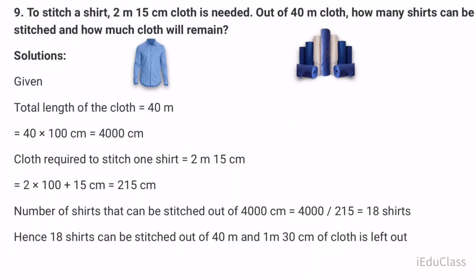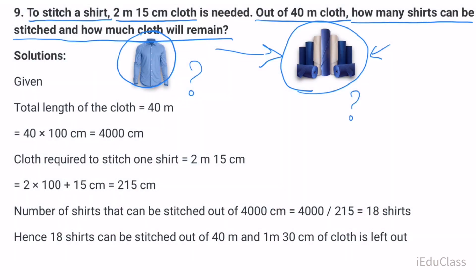Question nine: To stitch a shirt, 2 meters 15 centimeters cloth is needed. Out of 40 meter cloth, how many shirts can be stitched and how much cloth will remain? Solution: Total length of the cloth is 40 meters equals 4000 centimeters. Cloth required to stitch one shirt is 2 meters 15 centimeters equals 215 centimeters.